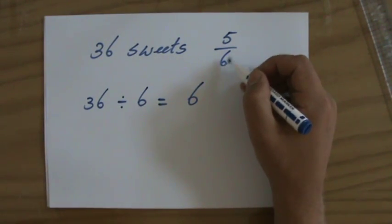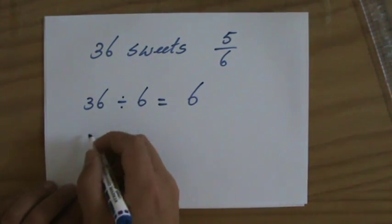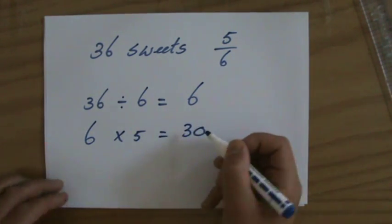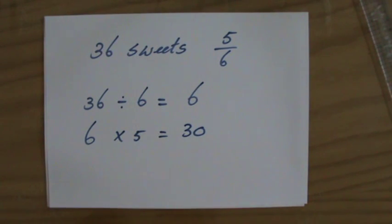But I don't just take one of those portions, I take 5 of them. So I eat, actually, 30 sweets.